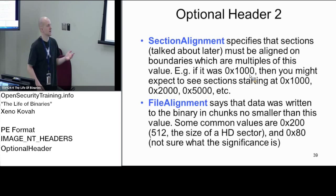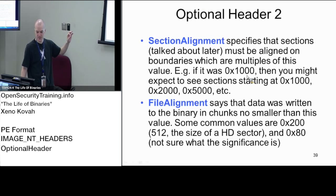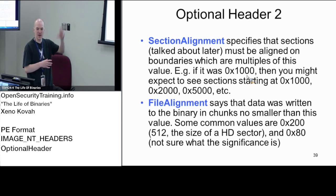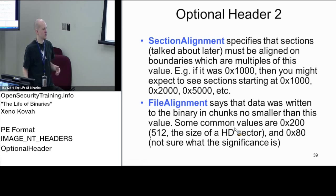File alignment says when you have data on disk, it should be at a multiple of a given value. For example, if file alignment is hex 200, you need to pad out the file before putting the next section. Say you have a section that's 10 bytes — you write your 10 bytes and then pad out to offset 200. Then you can write the next section, padding again to the next multiple of 200.